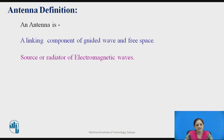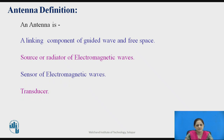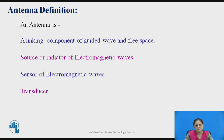An antenna is a source or radiator of electromagnetic waves. An antenna is a sensor of electromagnetic waves. It is also a transducer — it converts one form of energy into another form of energy. Thus the antenna converts electromagnetic waves into electrical signals or vice versa. The same antenna can be used as a transmitter as well as a receiver, and therefore the antenna is also known as a duplexer.